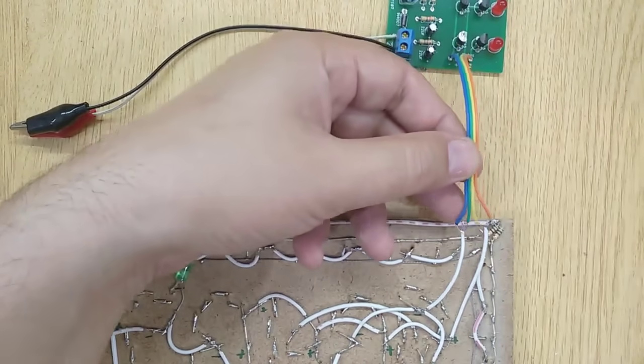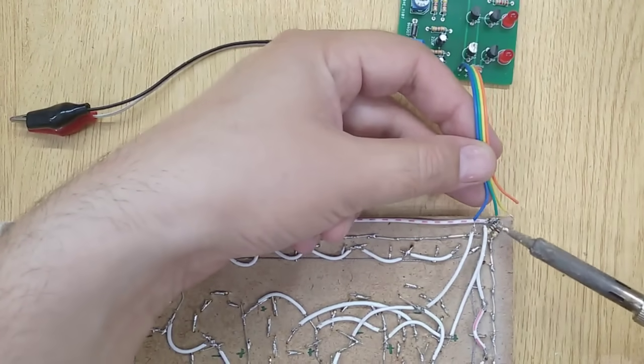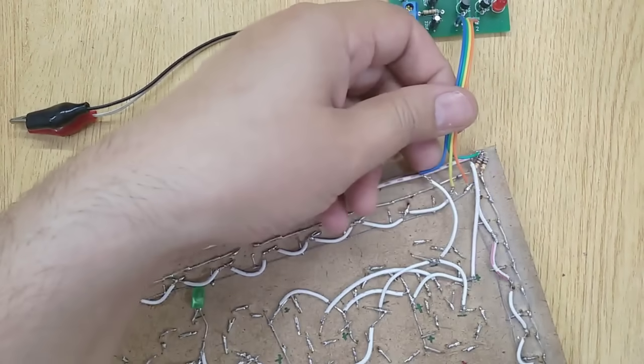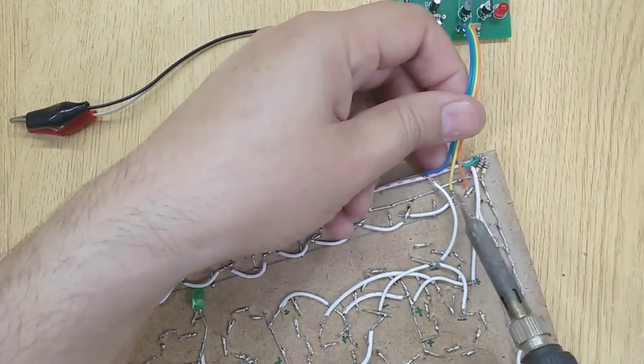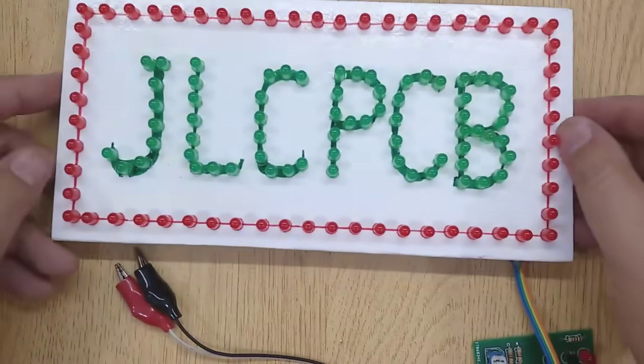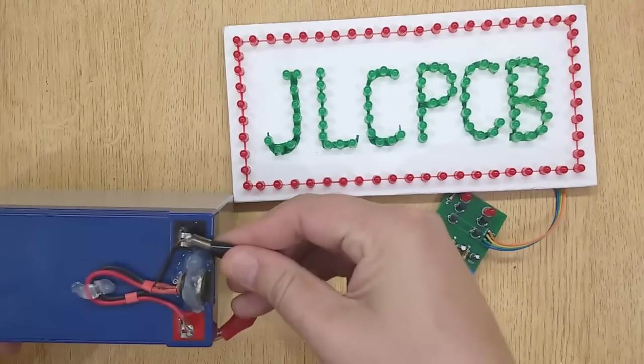Now solder all the wires of the blinker circuit. Now your LED signboard is ready. Let's test it by supplying 12 volt DC power.